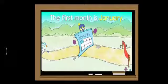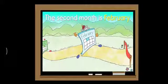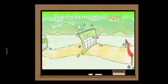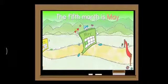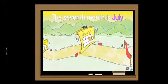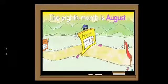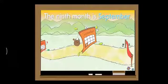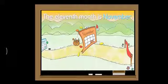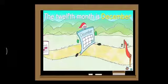Which is the first one? The first month is January. The second month is February. The third month is March. The fourth month is April. The fifth month is May. The sixth month is June. The seventh month is July. The eighth month is August. The ninth month is September. The tenth month is October. The eleventh month is November. And the twelfth month is December.